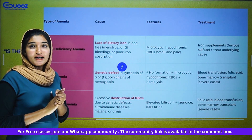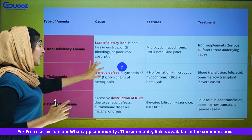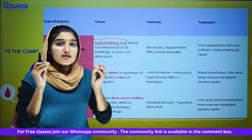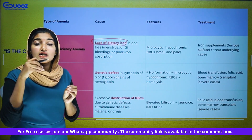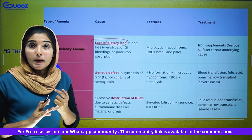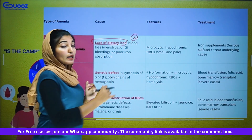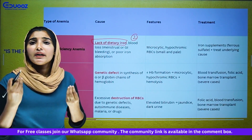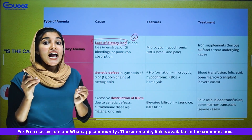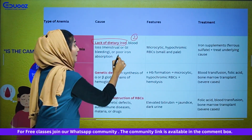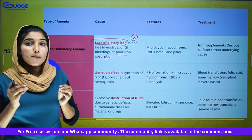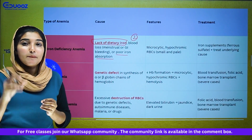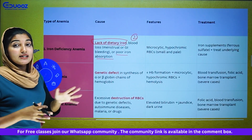Iron deficiency anemia — what is the main cause? It is because of lack of dietary iron intake. If our food does not have a sufficient amount of iron, we will be deficient. That is a major cause. Blood loss — such as menstrual bleeding or gastrointestinal bleeding — also causes blood loss. Another cause is poor iron absorption.